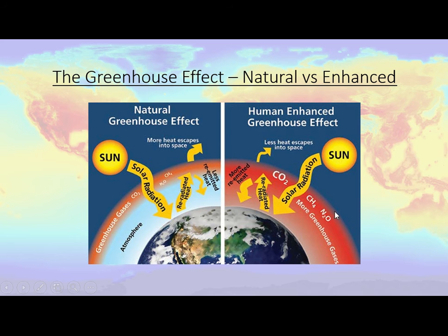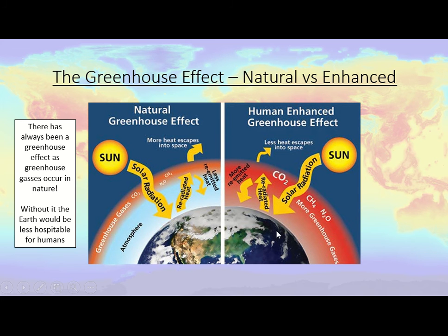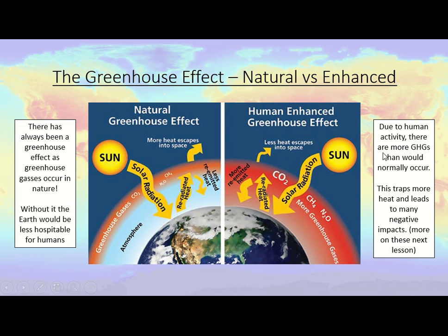CO₂ has increased, methane has increased, and nitrous oxide has increased, making the atmospheric layer thicker. This thicker layer doesn't prevent solar radiation coming in, but it does affect how much heat bounces back once it hits the atmosphere. More heat is re-emitted and less escapes into space, and that is what is creating the human-enhanced global warming we see today. Without the natural greenhouse effect, humans could not find Earth hospitable.